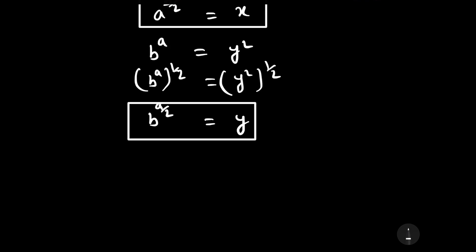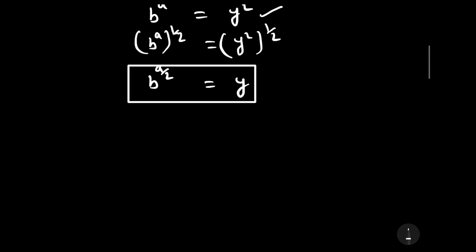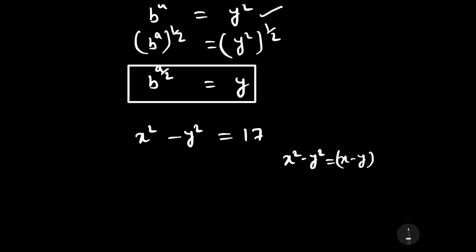Putting the values of b to the power a and a to the power b into the original equation, we will have x squared minus y squared is equal to 17. There is an identity for x squared minus y squared, which is x minus y times x plus y. With the help of this identity we can write x minus y times x plus y is equal to 17.